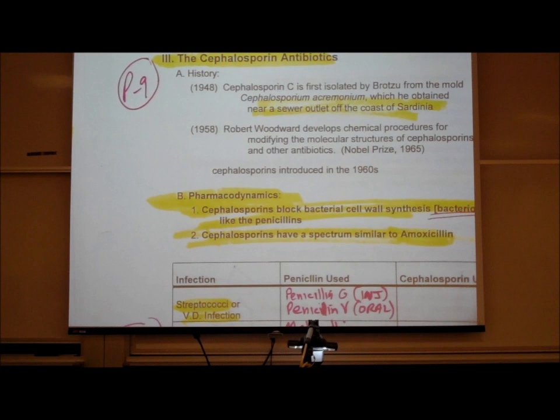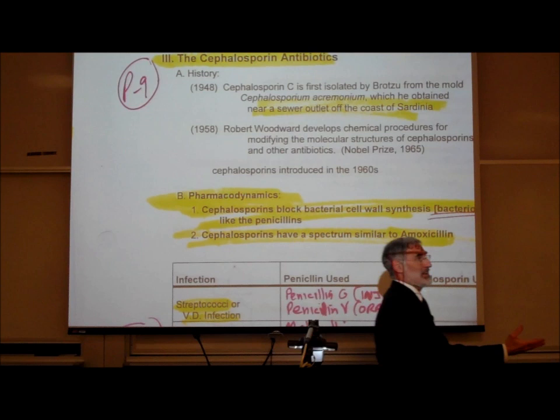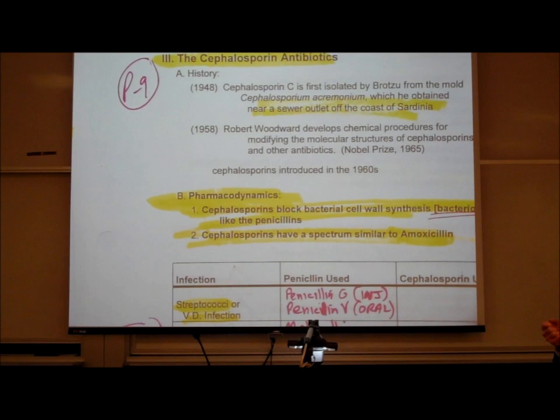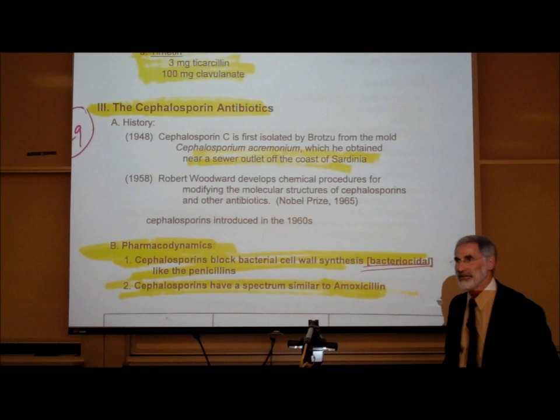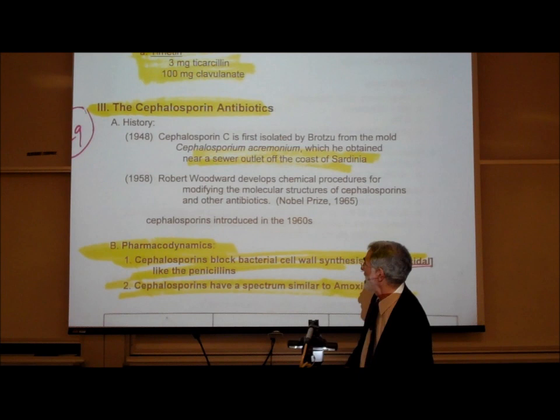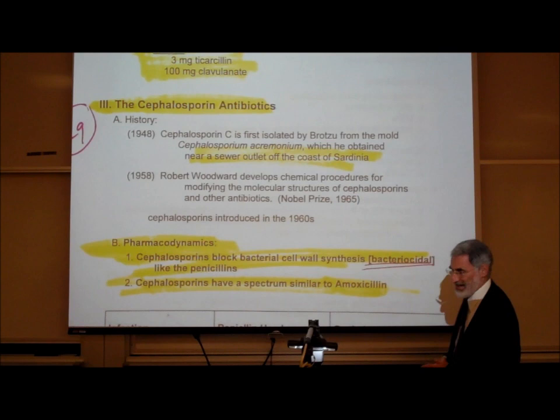The cephalosporin antibiotics, just as penicillin is an antibiotic obtained from a mold, the cephalosporins are antibiotics similarly obtained from a mold. The mold they first obtained cephalosporin from was growing near a sewer outlet off the coast of Sardinia. They discovered this mold and it became the source of the cephalosporin antibiotics. The person who developed the cephalosporin antibiotics was awarded the Nobel Prize in 1965.